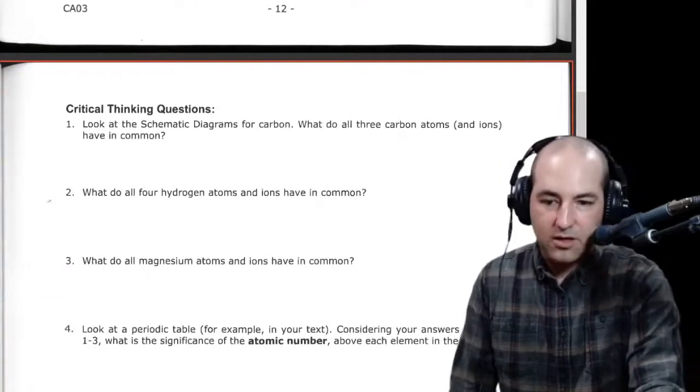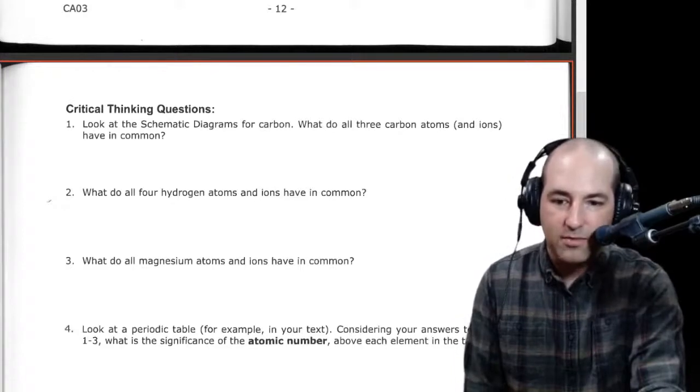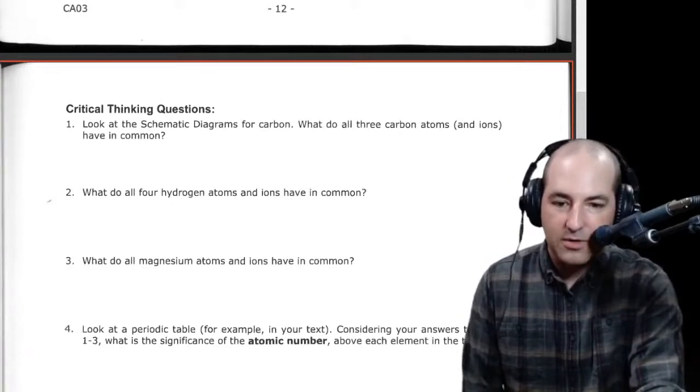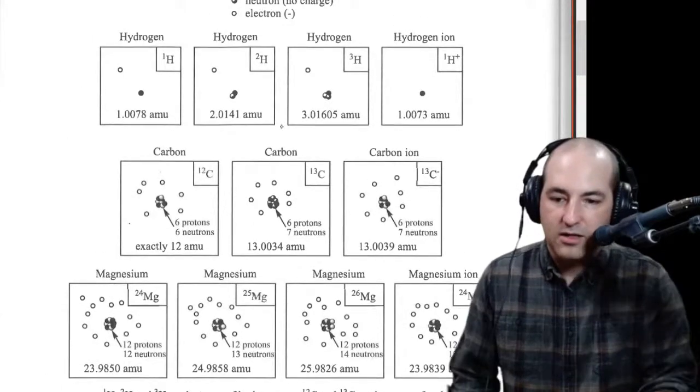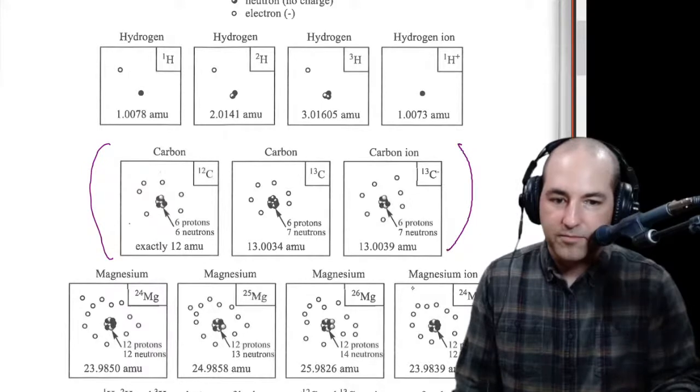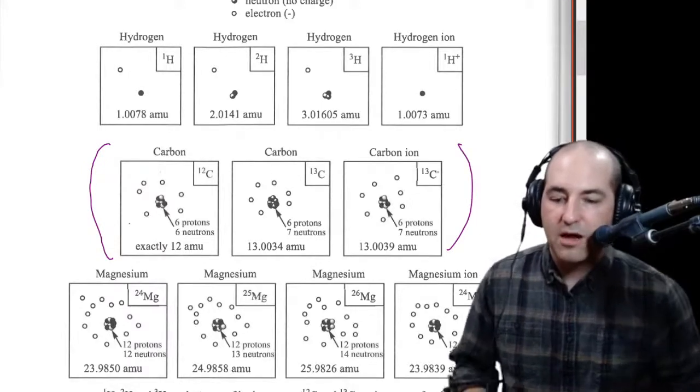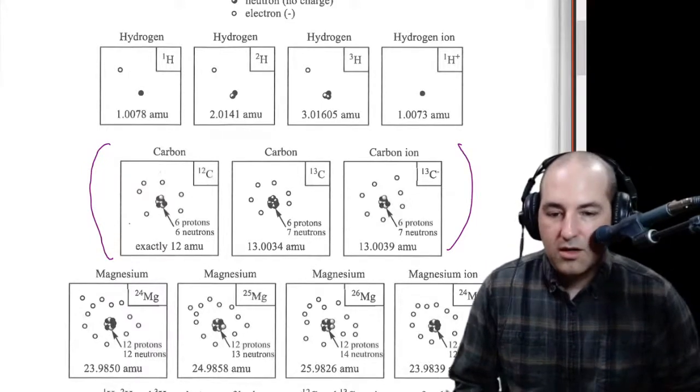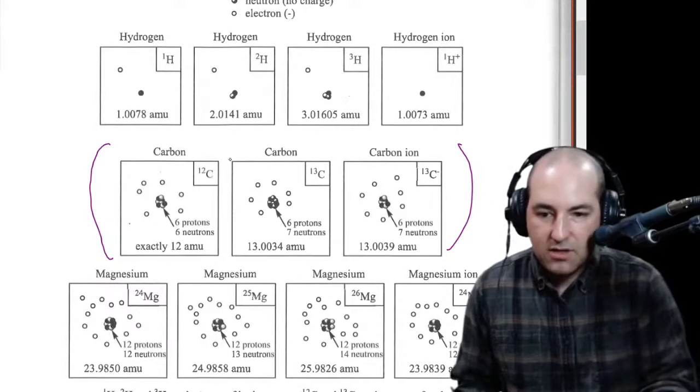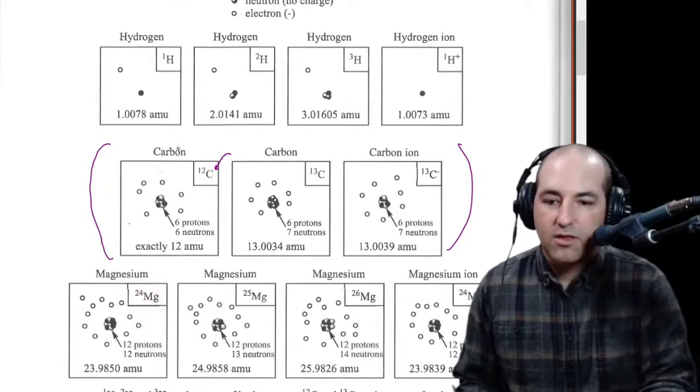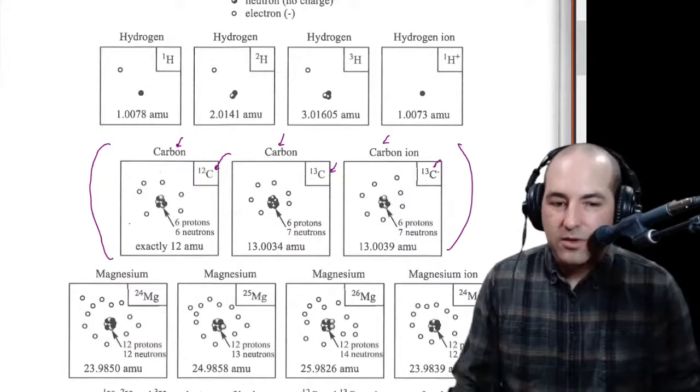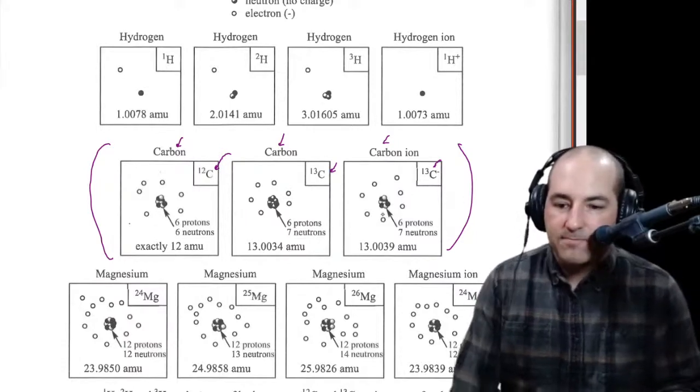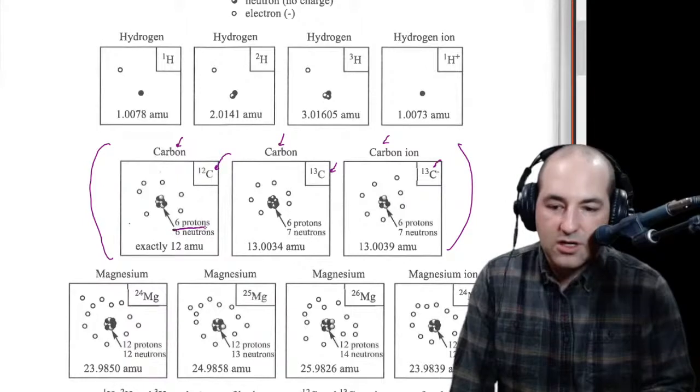Okay, so let's go look at our questions. Look at the schematic diagram for carbon. What do all three carbon atoms and ions have in common? So we're just going to go back up to these three carbon atoms and ions, which are these three here. And we're going to say, what do they all have in common? Well, a couple things. They've all got the letter C. They're all called carbon. But that's really where the similarities stop. With one exception, they each have six protons.